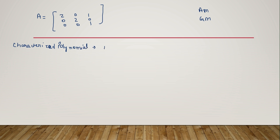Let's begin with the characteristic polynomial. The characteristic polynomial is A minus lambda I. If you make the matrix out of it, that is the characteristic polynomial, and if you set its determinant equal to zero, that gives the characteristic equation.